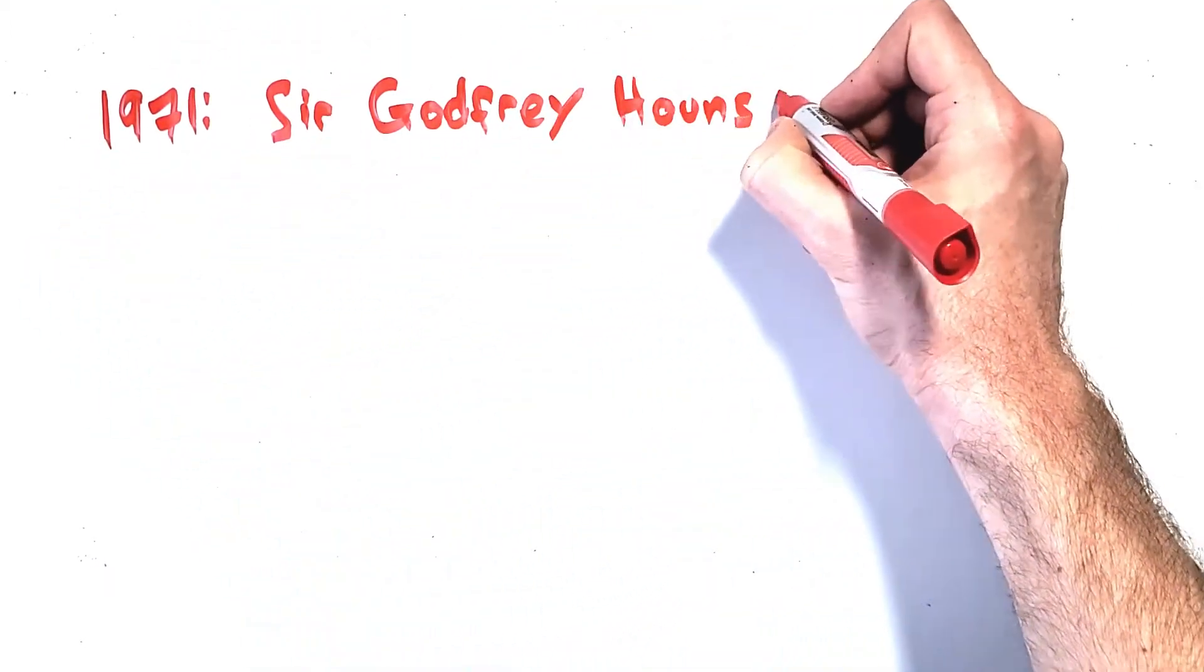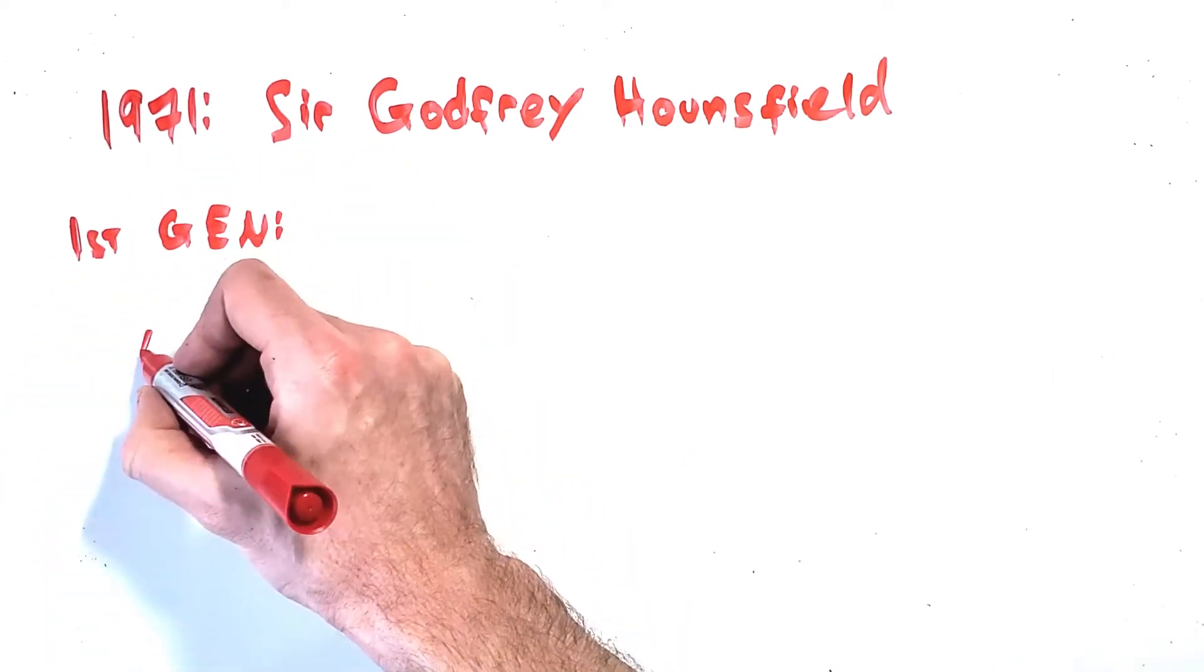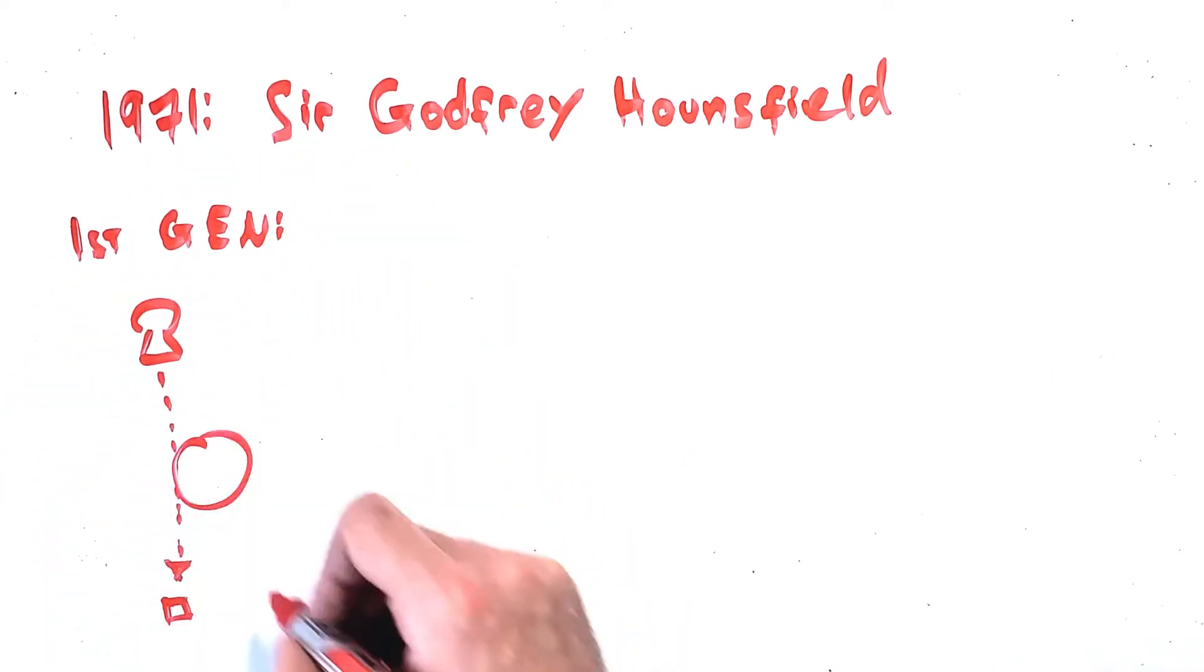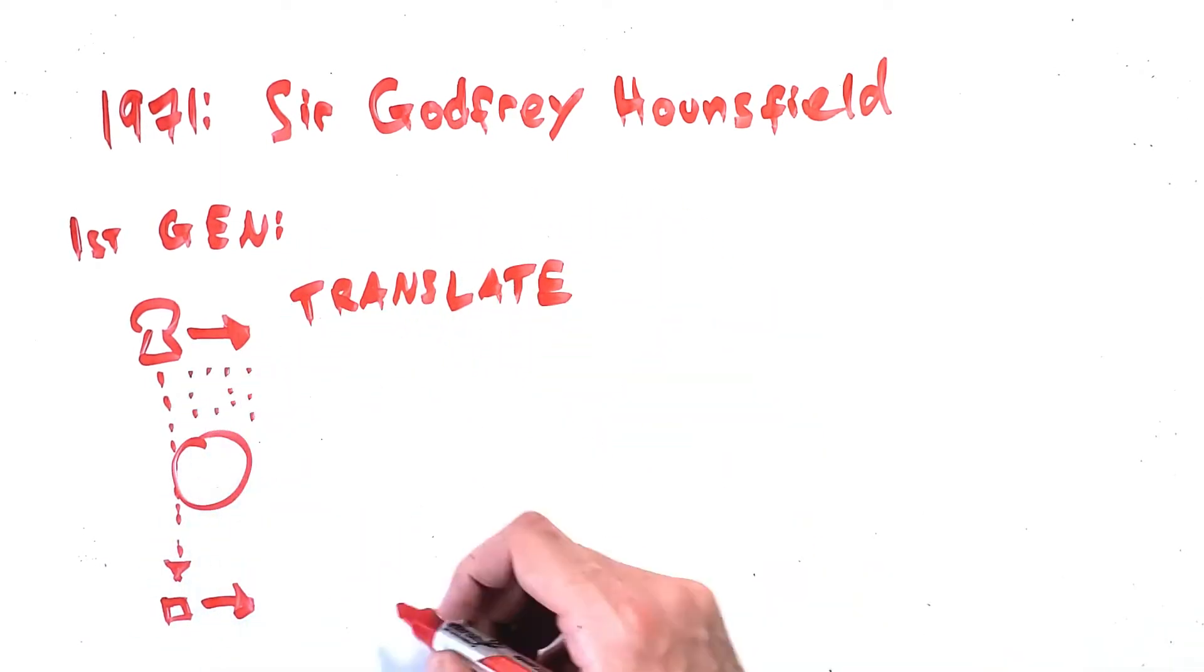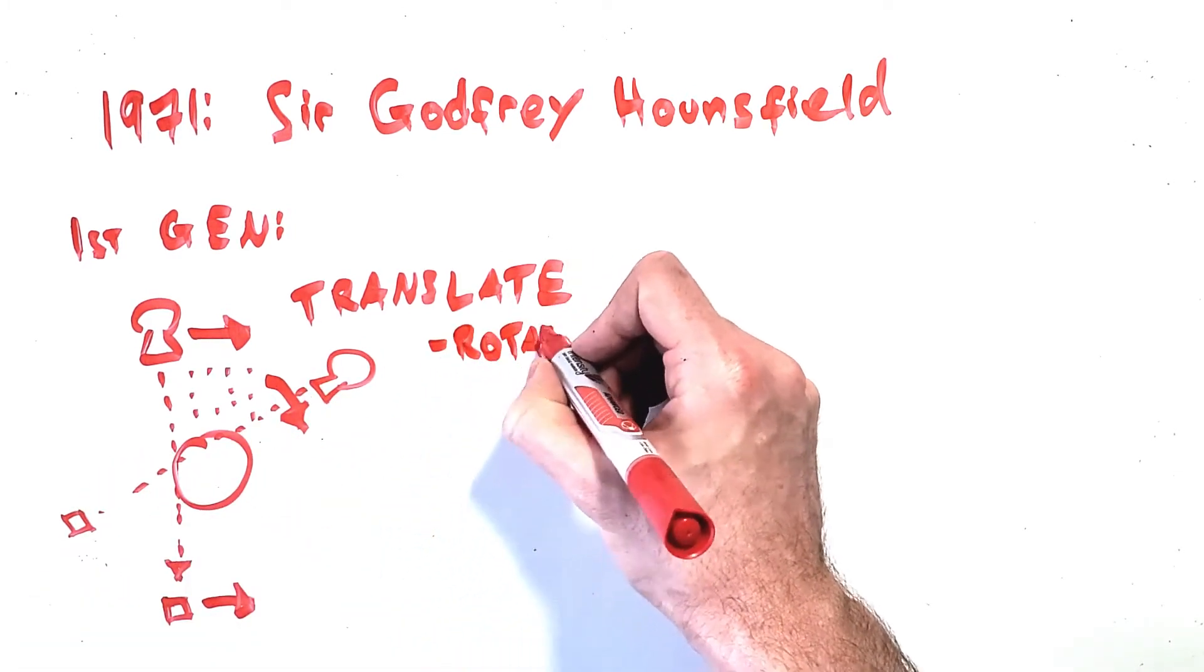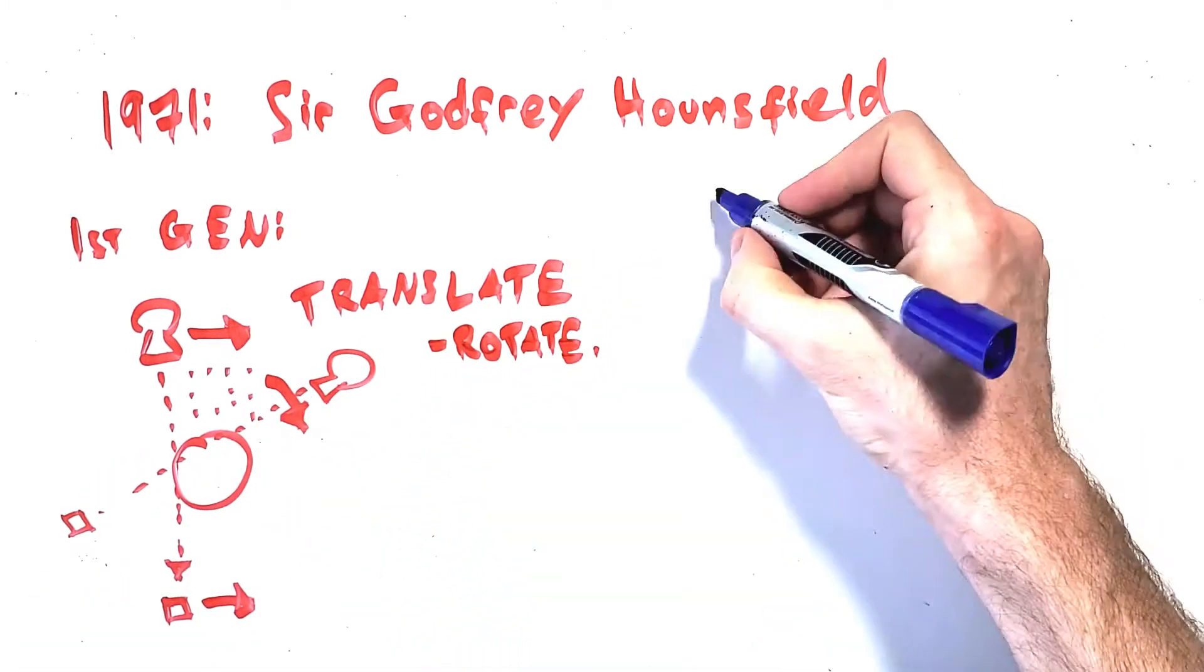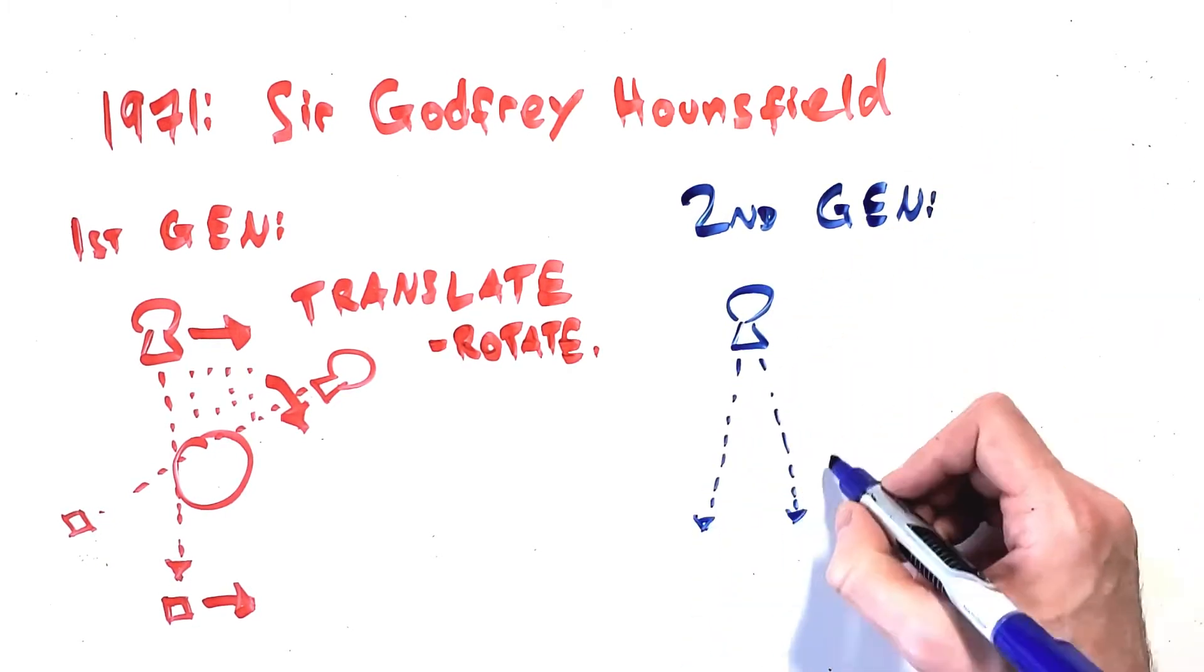The first CT scan was performed by Sir Godfrey Hounsfield in 1971, and the first generation of scanners used a translate-rotate motion where a single detector element would be exposed sequentially by a pencil beam while translating widthways across the patient. Then the whole system would rotate one degree at a time and repeat the process. Needless to say this took a very long time.